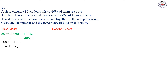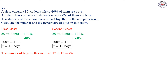In the second class, we have 20 students. They constitute 100%. We have 60% of them are boys. Then the number of boys in the second class is x. We make a cross multiplication, then we get 100x equals 1200, then x equals 12 boys. Then the number of boys in this room where the students of these two classes meet together is 12 plus 12 equals 24.